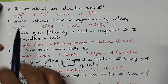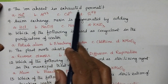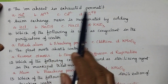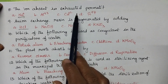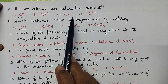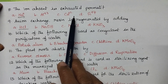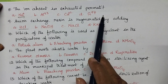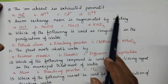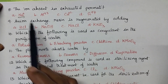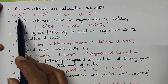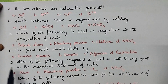The ion absent in exhausted permutit: when permutit is exhausted, all the sodium ions present in the zeolite are replaced by calcium and magnesium ions. So, exhausted permutit will not contain sodium ions.